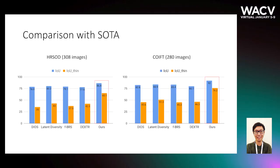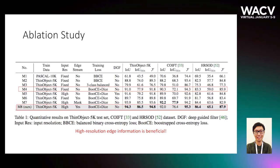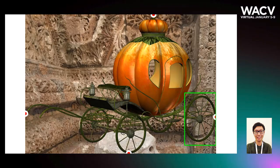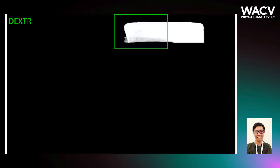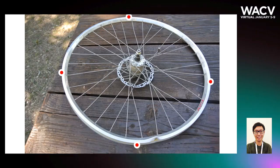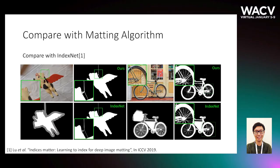We first compare our method with the state-of-the-art. Our method significantly outperforms all other methods, especially on thin parts as indicated by IOU-thin. We also perform an ablation study and show that a finely annotated dataset is essential for these tasks, and that high-resolution and edge information are equally important. We then show some qualitative results, and also compare with a matting algorithm, demonstrating comparable performance while only requiring four extreme clicks as input as opposed to a carefully drawn trimap.